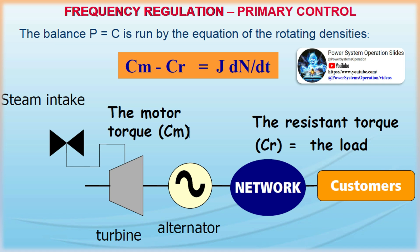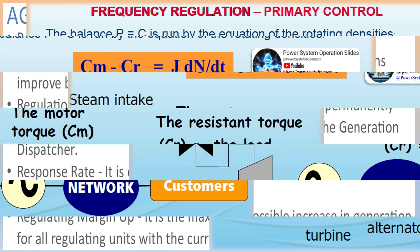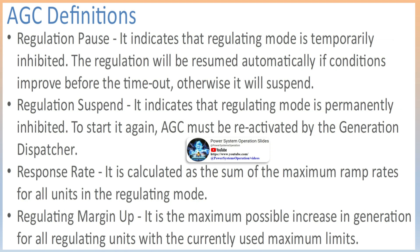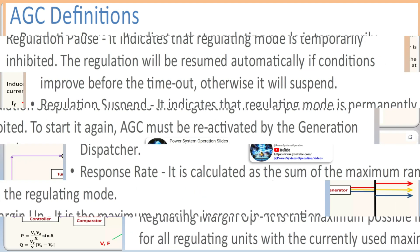Time correction action: it indicates that the time correction component is included in the ACE calculation. The time correction is calculated from a frequency offset or from a time error measured by the time base unit. Time correction mode: there are two possible modes which are mutually exclusive. Manual — a manually entered frequency offset is used. Auto — the time error from the time base unit is used.